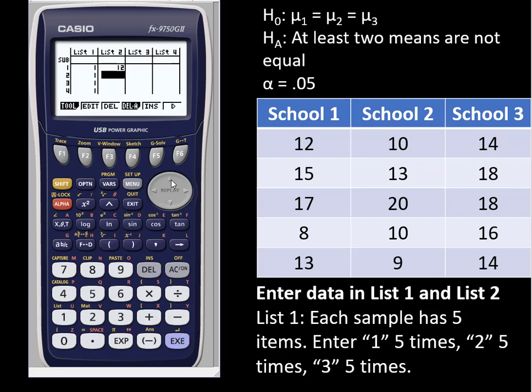We'll enter 12, and that means the first person in sample 1 had a value of 12. Then 15, 17, 8, and 13. Now we're on school 2. We enter 10, 13, 20, 10, and 9. And on school 3, 14, 18, 18, 16, and 14.